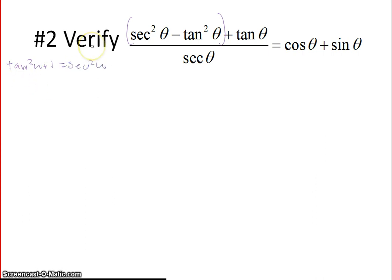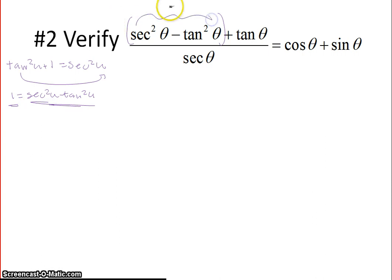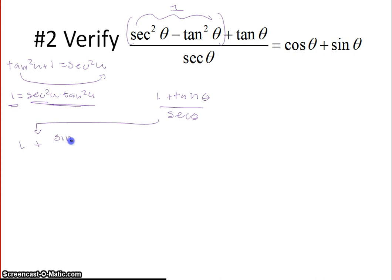If I rewrite the Pythagorean identity by rearranging — bringing a term over — I get 1 equals secant squared u minus tangent squared u. So I can replace that expression with 1 directly using the Pythagorean identity. That gives me 1 plus tangent of theta all over secant of theta. To get this to look like cosine plus sine, since we have tangents and secants, we need to rewrite everything in sines and cosines. Tangent is sine of theta over cosine of theta using the quotient identity, and secant of theta is 1 over cosine of theta.